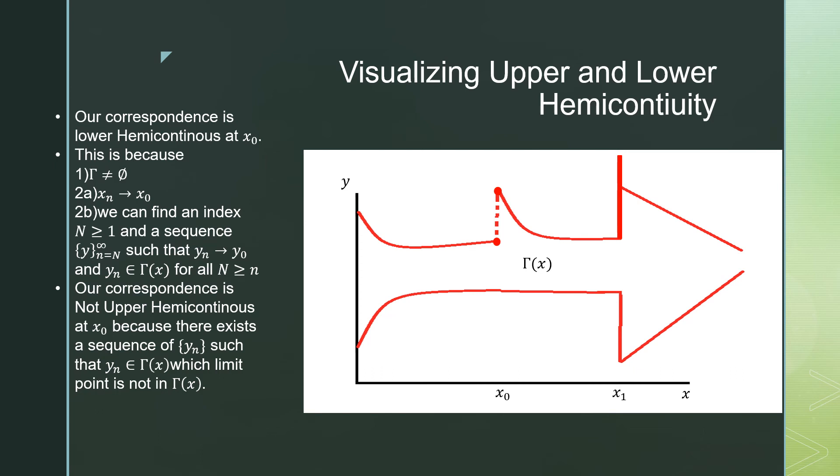This is because there exists a sequence of y_n such that y_n is contained in Γ(x_n) but its limit point is not in Γ(x_0). So the best way to do this, I'm just going to do this over here. I'm going to draw a little point here.